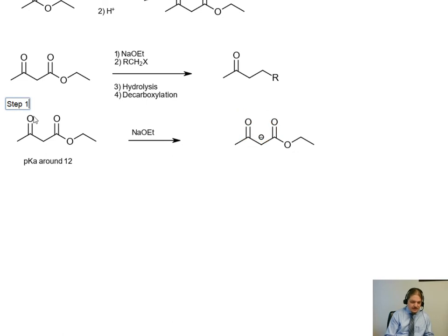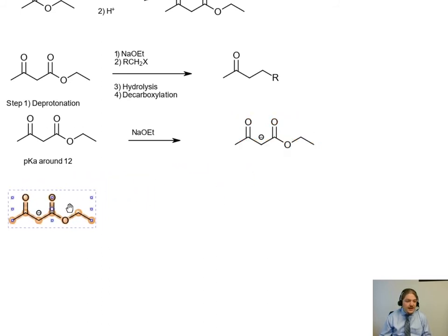So like the melonic ester synthesis, we're going to choose a base that matches the alkyl group on the ester because we want to avoid nucleophilic substitution side reactions on this ester structure. Once we have the anion, it's time for the alkylation.